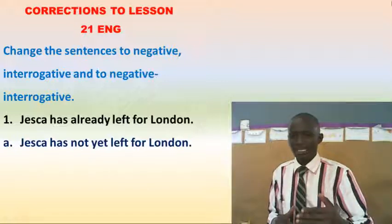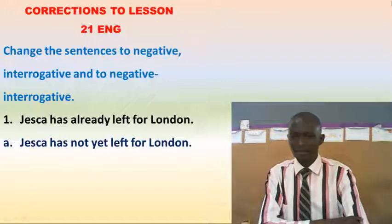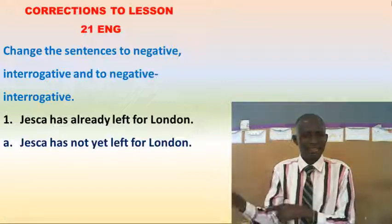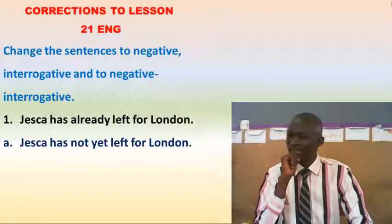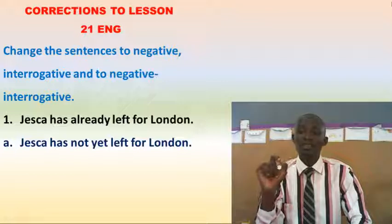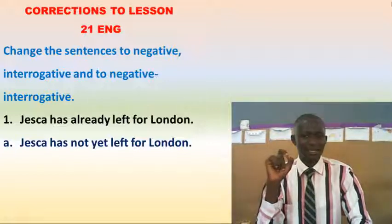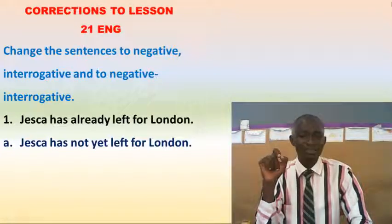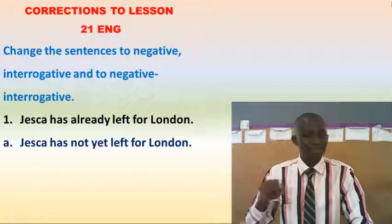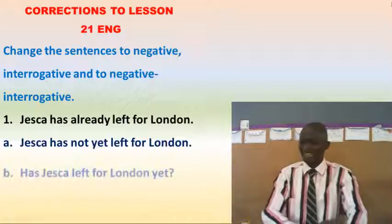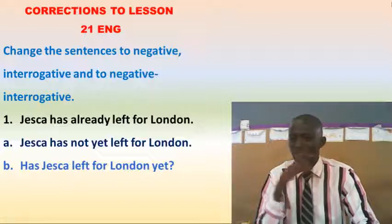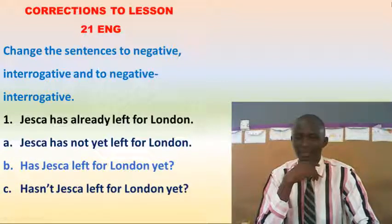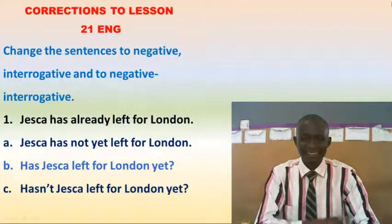If you want to show that the action hasn't taken place yet, you say 'Jesca has not yet left for London.' This can also be put in an interrogative form developed from the helping verb of the tense. If the sentence is present perfect, make your question also present perfect. The answer is: 'Has Jesca left for London yet?' Or in negative form: 'Hasn't Jesca left for London yet?'